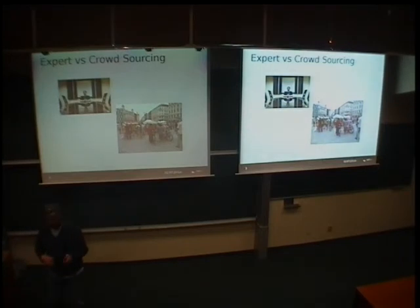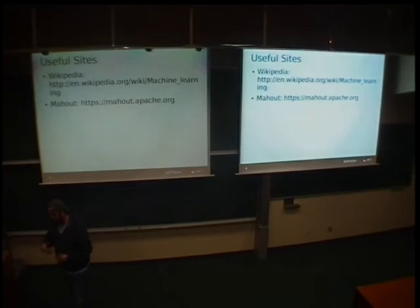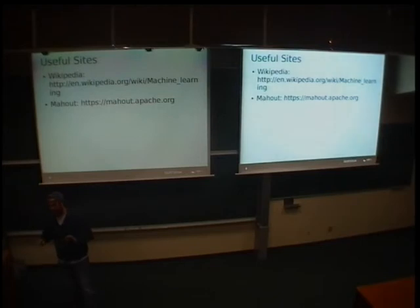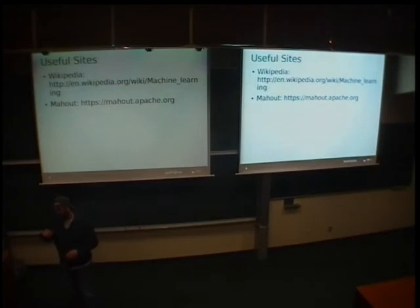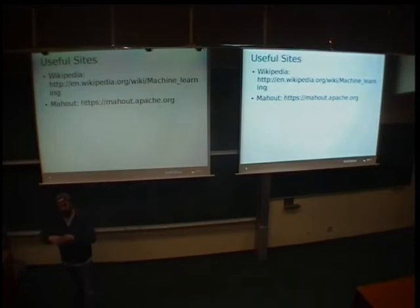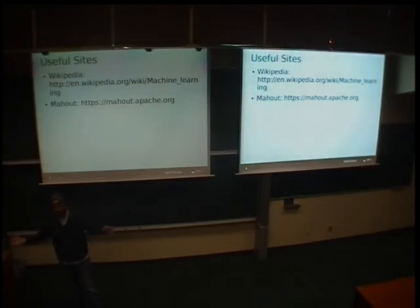So those were a couple of things. Wikipedia, I swear to God, has the best introduction and descriptions of machine learning as a concept and as individual algorithms. And then Mahout is a project under the Apache umbrella that is like a framework where people have contributed implementations of all the different possible algorithms you can use to try to apply AI to your system.